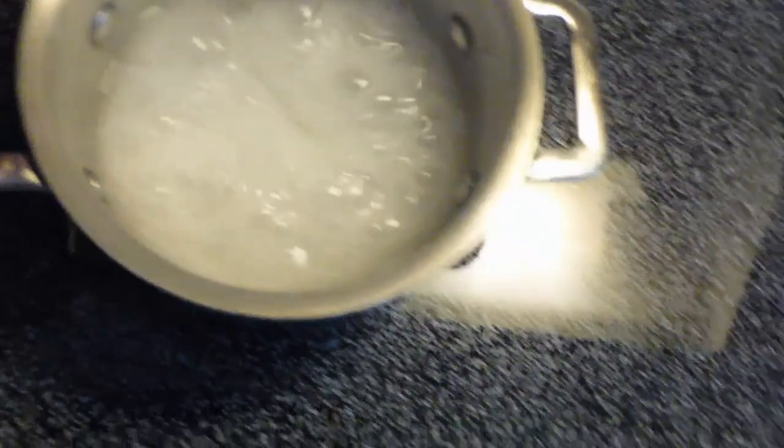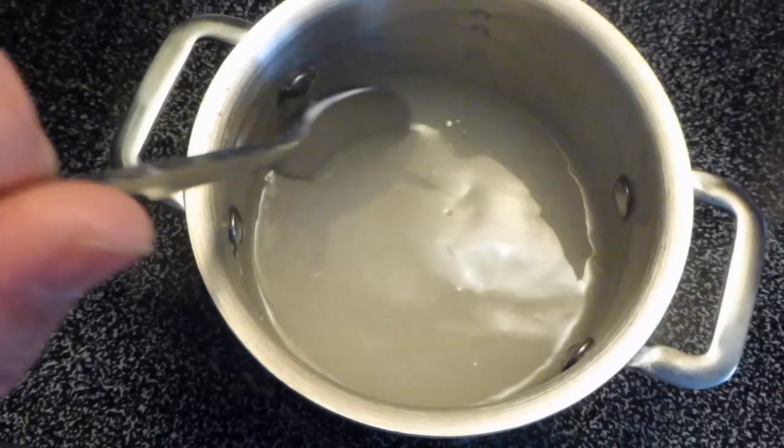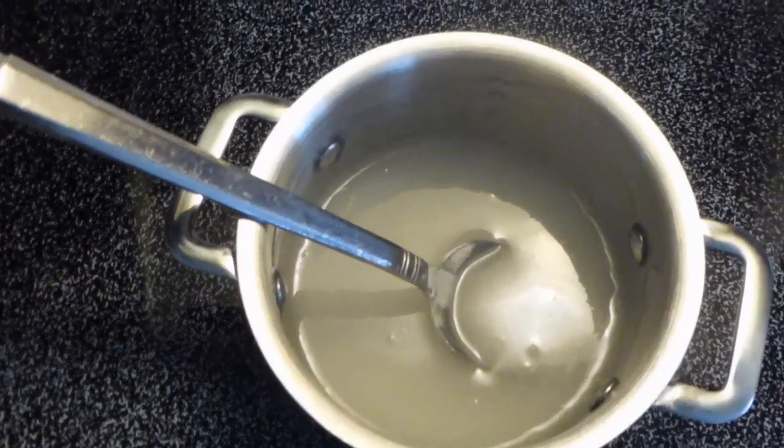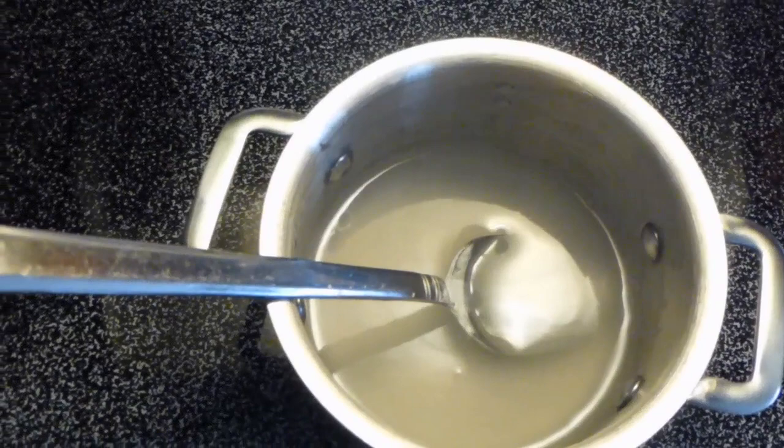This is about the consistency. I'm going to take it off. This is about the consistency of the starch and it's going to cool off a little bit and thicken as well. Then when it's cooled off, we will dip our crocheted items into this cooked starch.